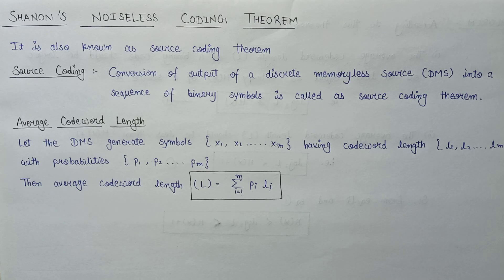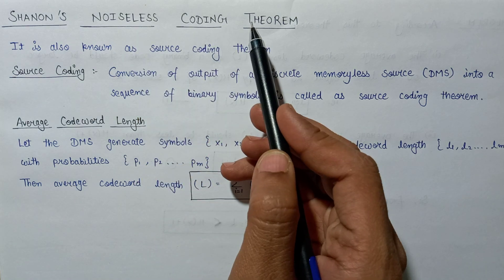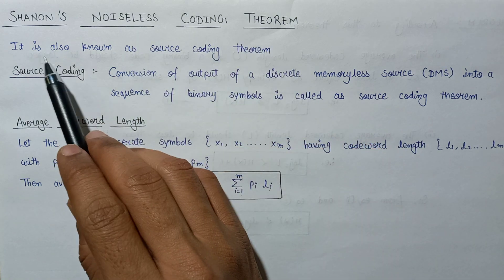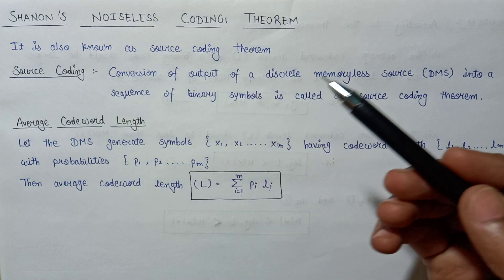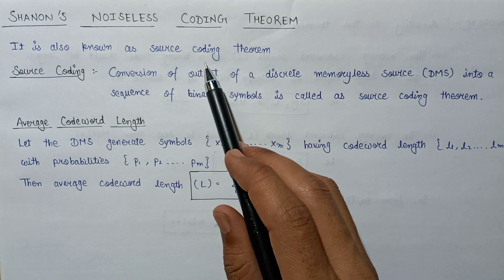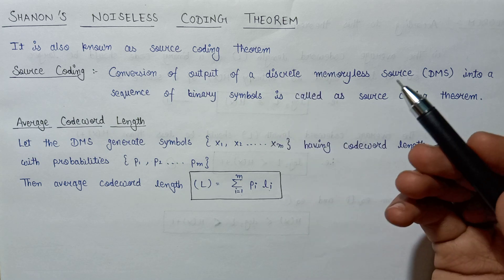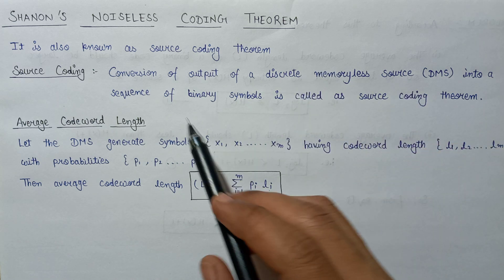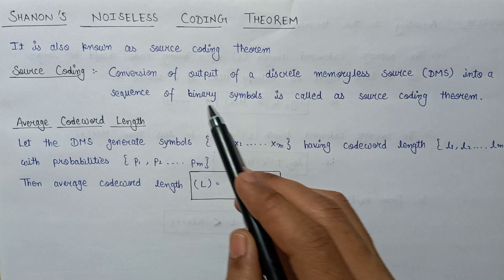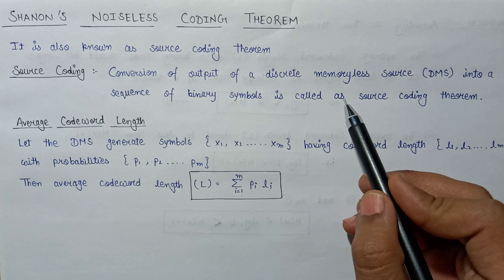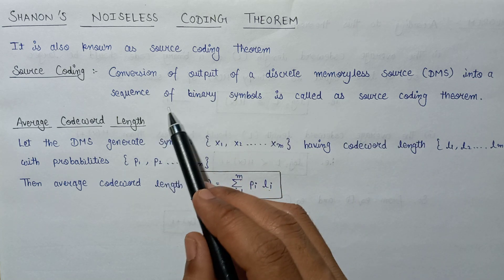In this lecture we are going to study about Shannon's noiseless coding theorem, which is also known as the source coding theorem. A discrete memoryless source emits some number of symbols, and the conversion of the output of a discrete memoryless source into a sequence of binary symbols is called source coding.